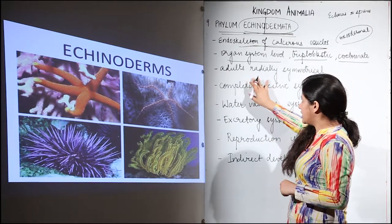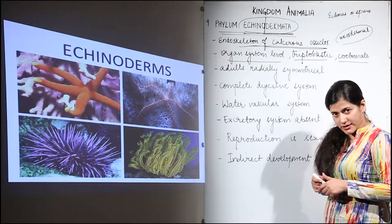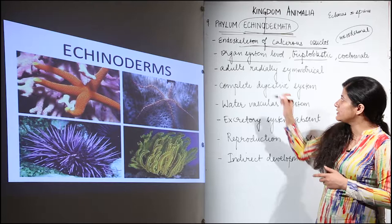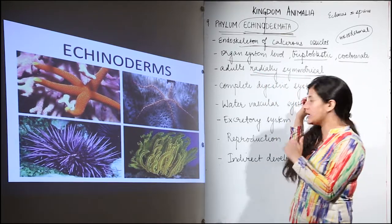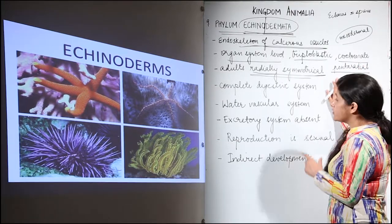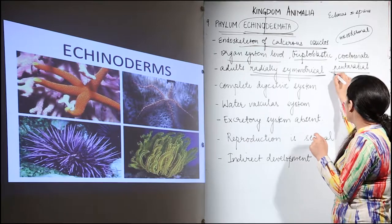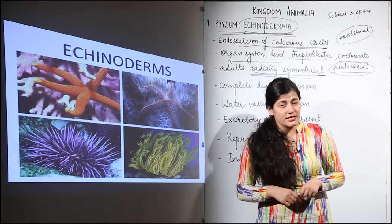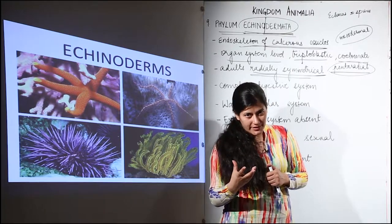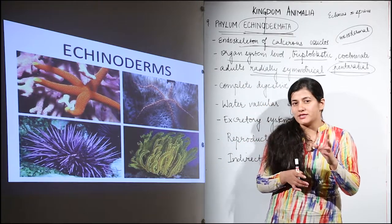They are phylogenetically placed at the ninth position, taking into consideration evolutionary relationships and the complexity of body organization. Their symmetry is radial — specifically pentaradial. Now, you might be surprised, because when we started with Kingdom Animalia I mentioned that bilateral symmetry is the hallmark of development. Organisms with radial symmetry were placed much earlier, in the second and third phylums.